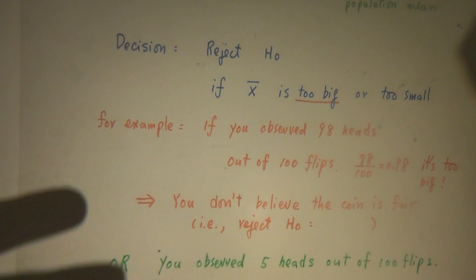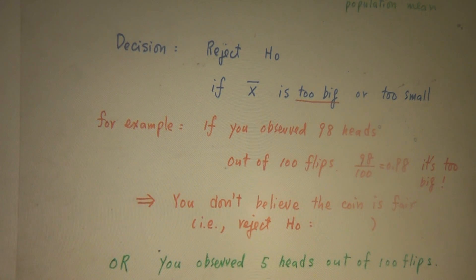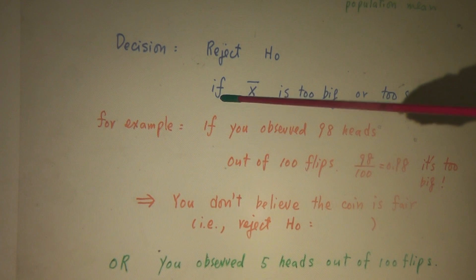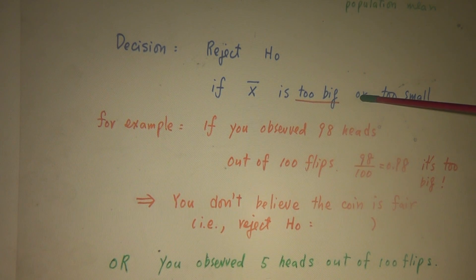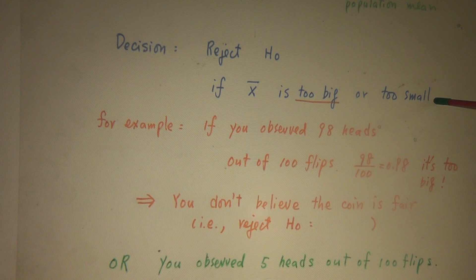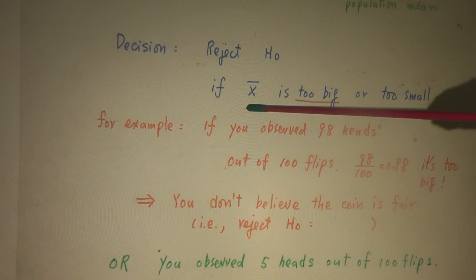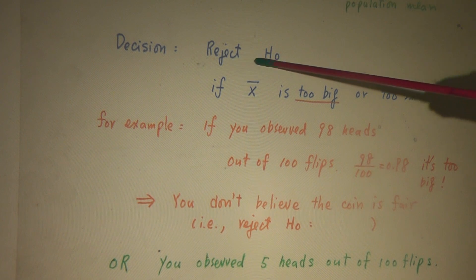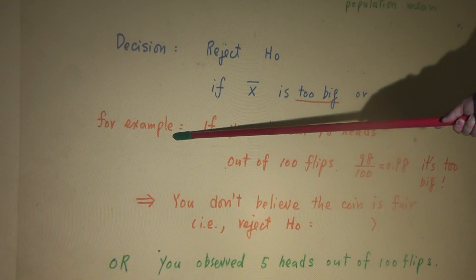Now, decision. We're going to reject H-naught if x-bar is too big or x-bar is too small. Why? When x-bar is too big or too small, we tend to reject H-naught. Look at the example here.